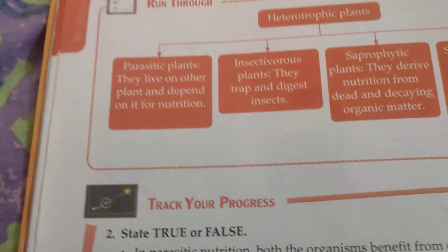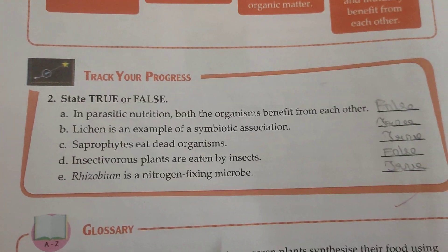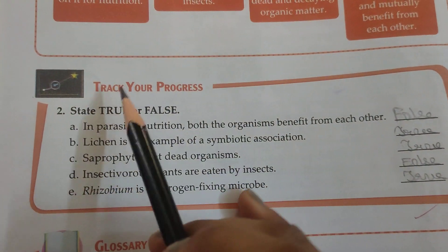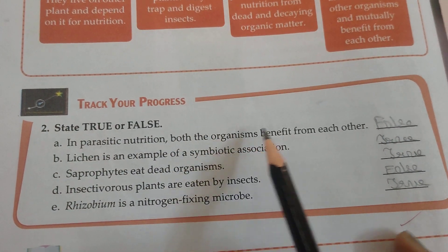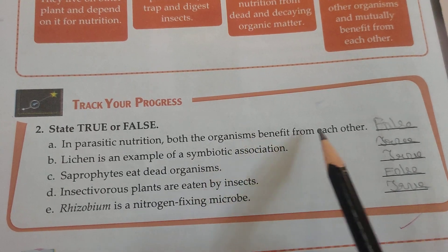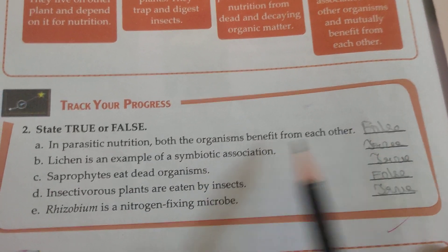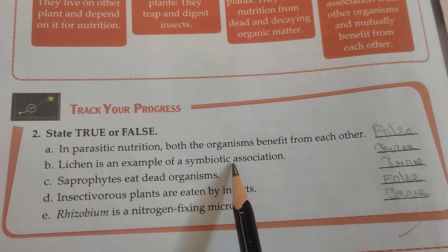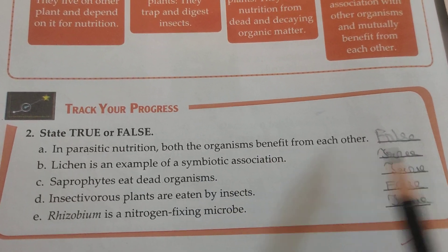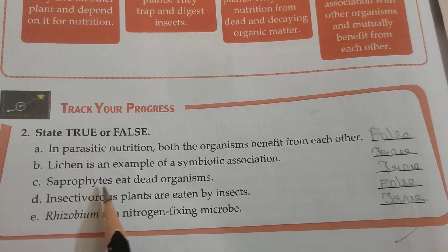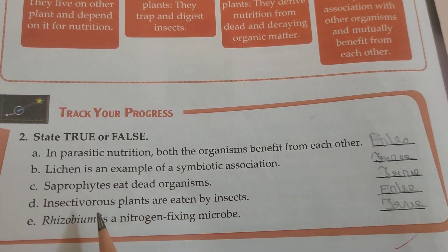Now we are coming on page number 10. This is true or false. In parasitic nutrition, both the organisms benefit from each other — False. Lichen is an example of symbiotic association — True. Saprophytes eat dead organisms — True.